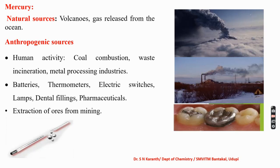Mercury is a very poisonous material which is converted into gaseous form. When we inhale this gas, it causes a lot of damage to the lung and digestive system. Volcanic gas releases mercury from the ocean. A large quantity of mercury is introduced through volcanoes, which are the main natural source of mercury.